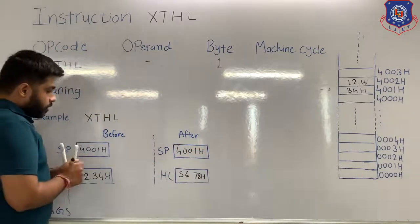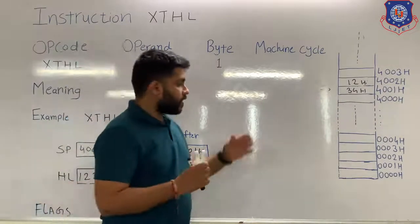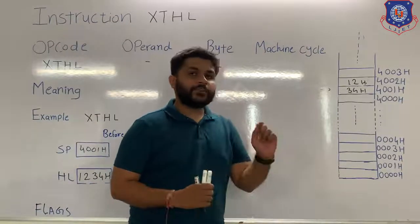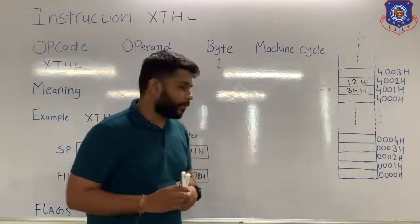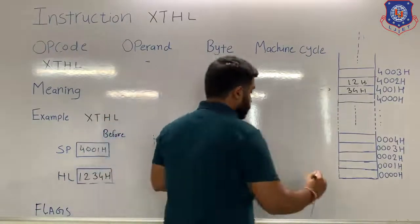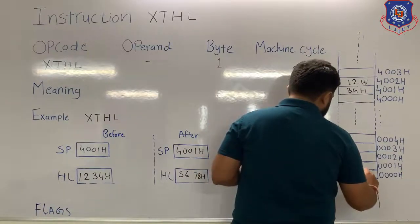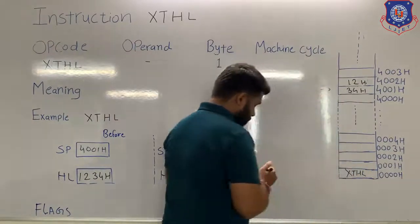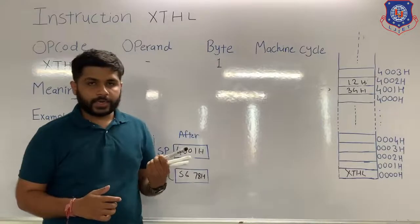This instruction is of one byte, so when it is stored in memory, it will occupy only one memory location. When this instruction is stored, the microprocessor will start its task.